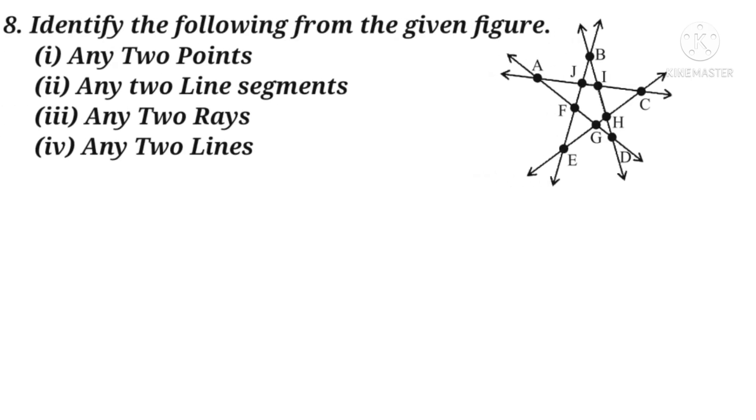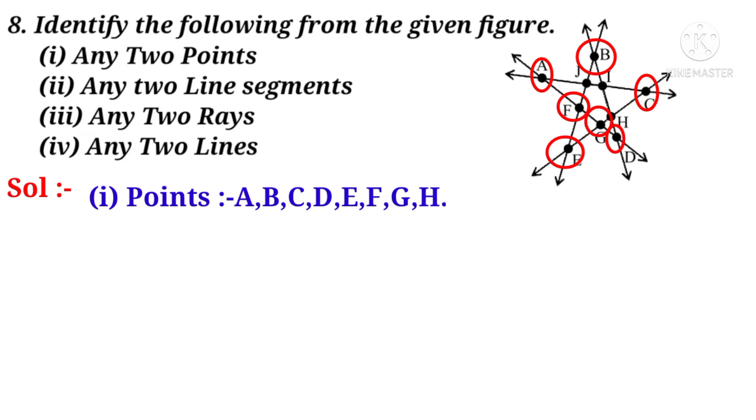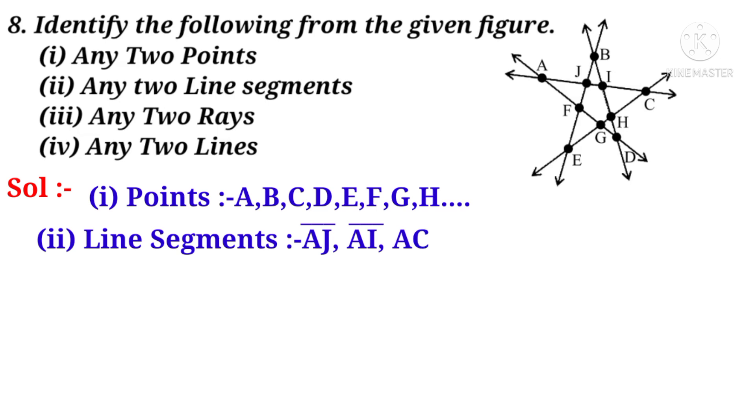Now number 8. Identify the following from the given figure. Solution: Let us take points. Points are the English capital letters A, B, C, D, E, F, G, H, and so on. Then line segments. Line segments are the lines joining the points. Let us say AJ, AI, AC, and so on.